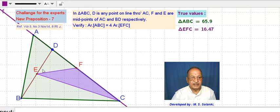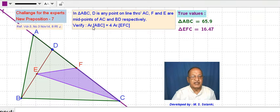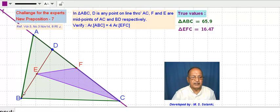E and F are the midpoints of AC and BD respectively. We have to verify that area of triangle ABC is equal to 4 times the area of EFC.